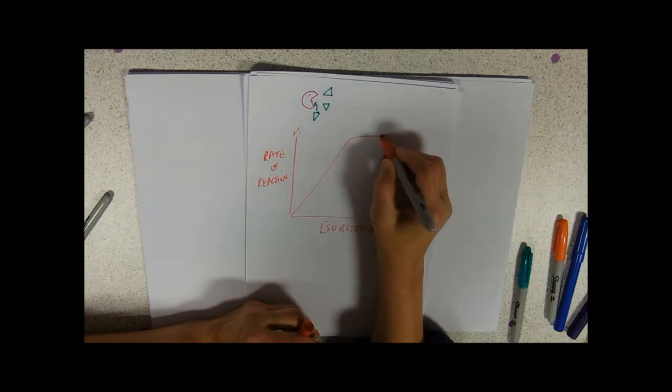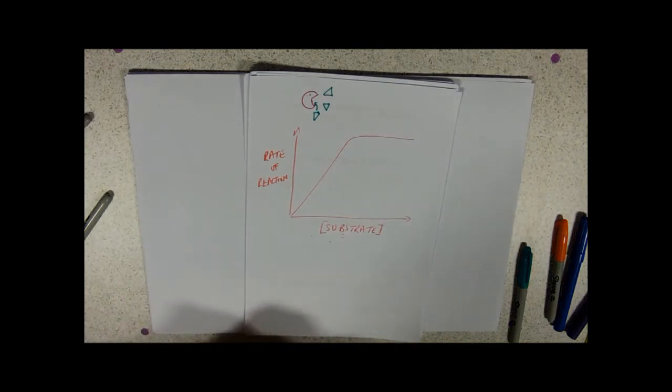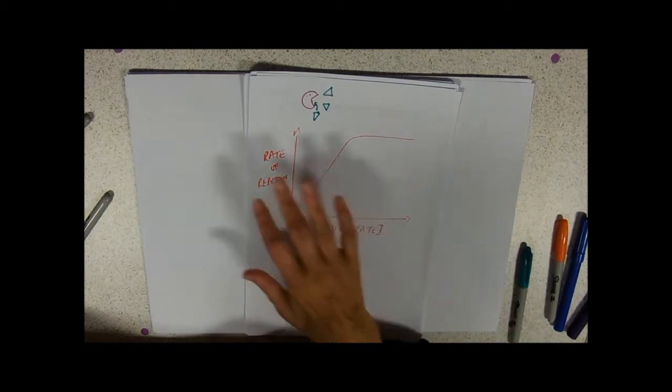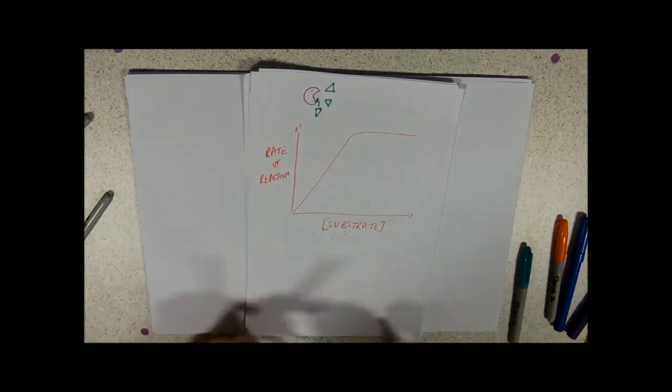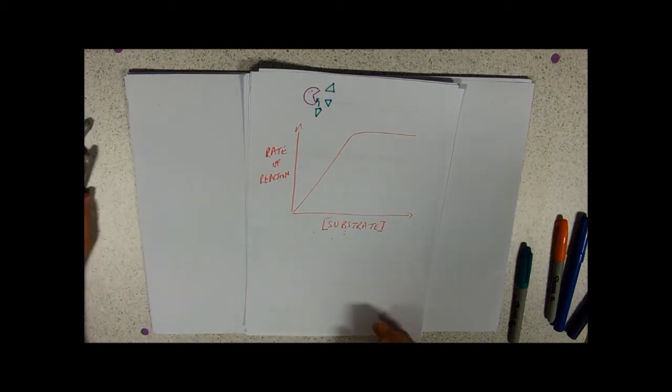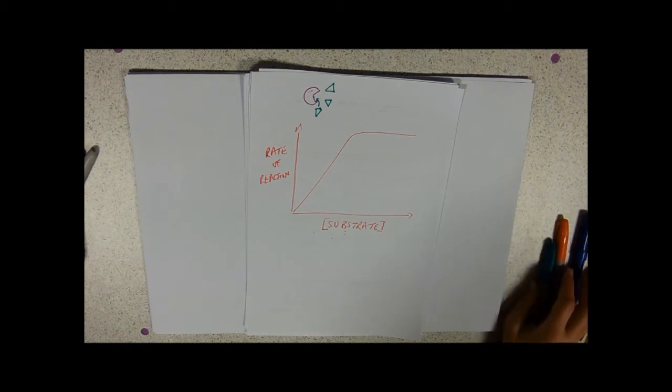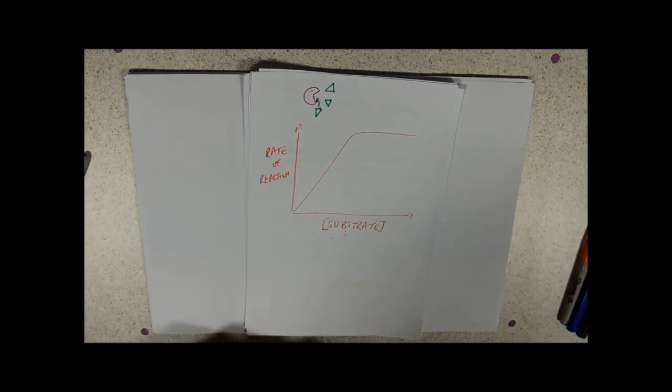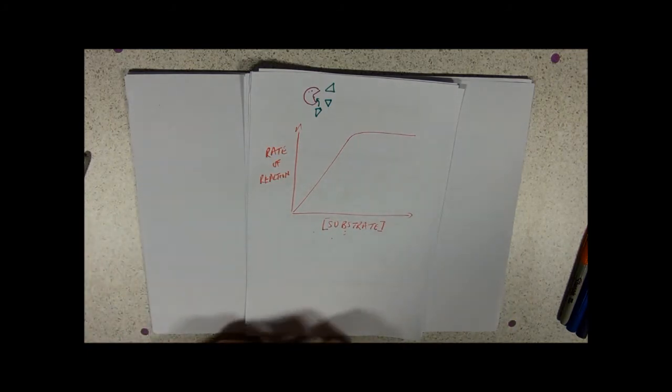But then it does something weird and it kind of levels off. Now the reason that it would level off would be that all of the enzymes in the solution are full all of the time. If you were completely surrounded by mini Mars bars, there would be a point at which you really couldn't cram any more in. You couldn't eat them fast enough and you could pick up as many as you wanted, but you can only fit one in your mouth at a time. And once your mouth's full all of the time, you can't eat them any faster, is the bottom line.